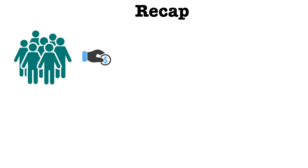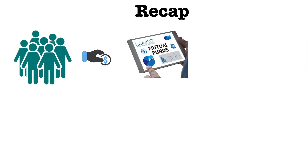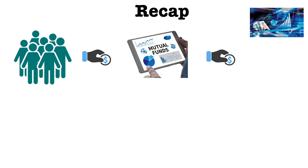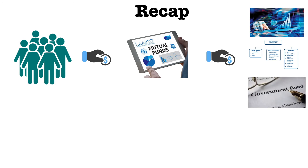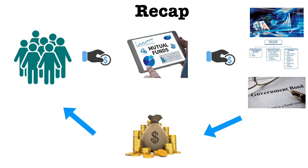Let's have a recap of what we have learned. A group of investors invest their money into an instrument called mutual fund. In return, the mutual fund manager will invest that money into the stocks, money market instruments, or government bonds. After some time, the mutual fund investment will yield some money, which will be paid back to the investors after the expense ratio is deducted, as mentioned earlier.